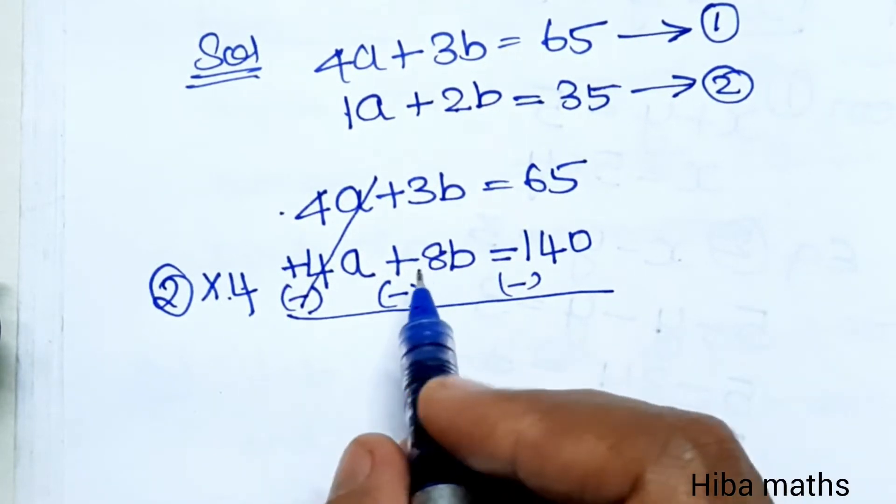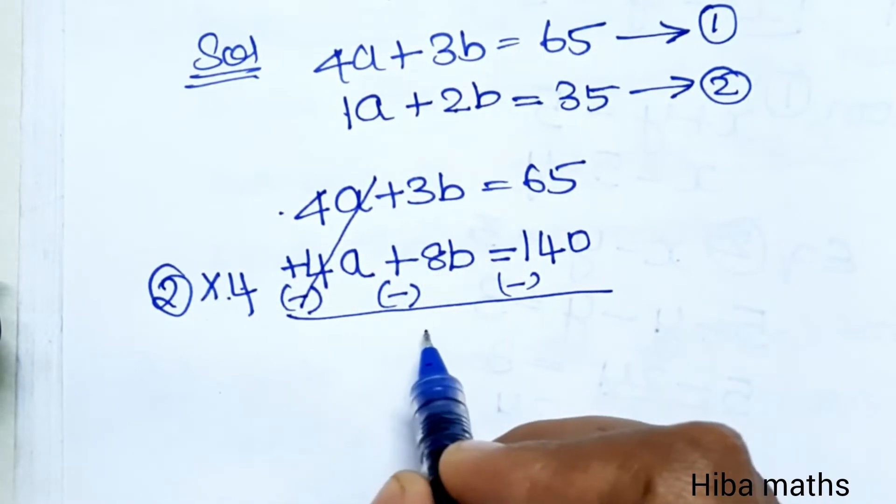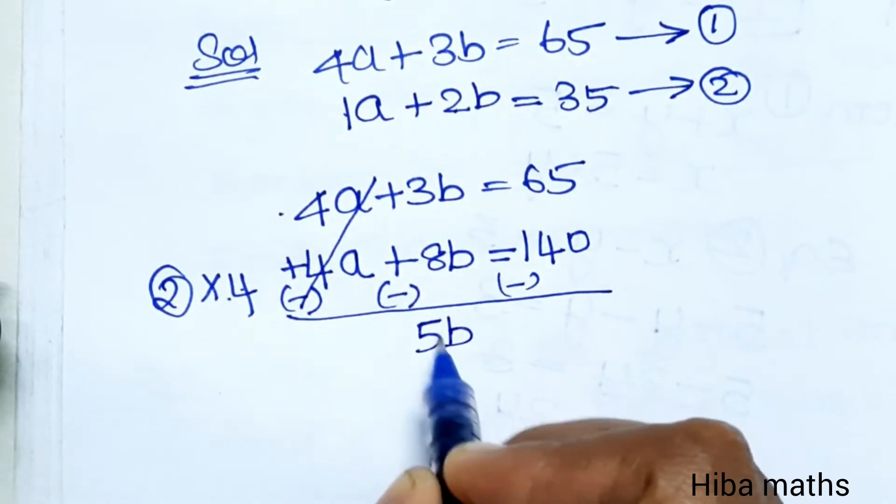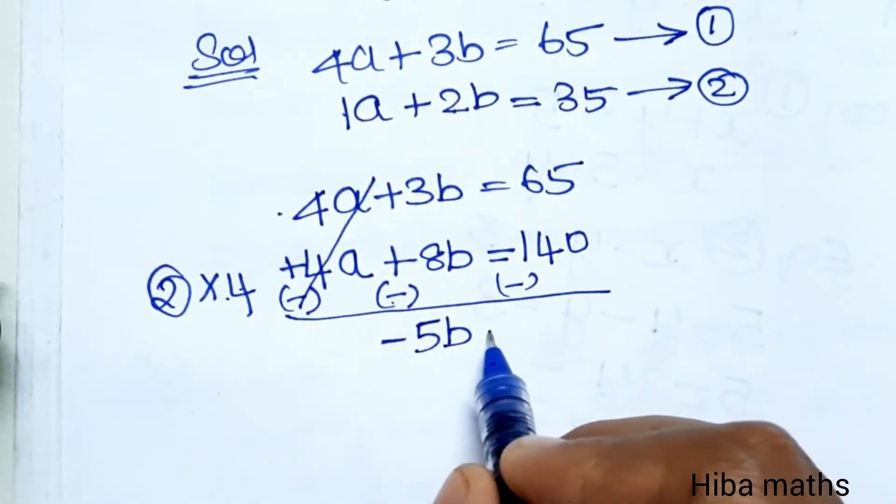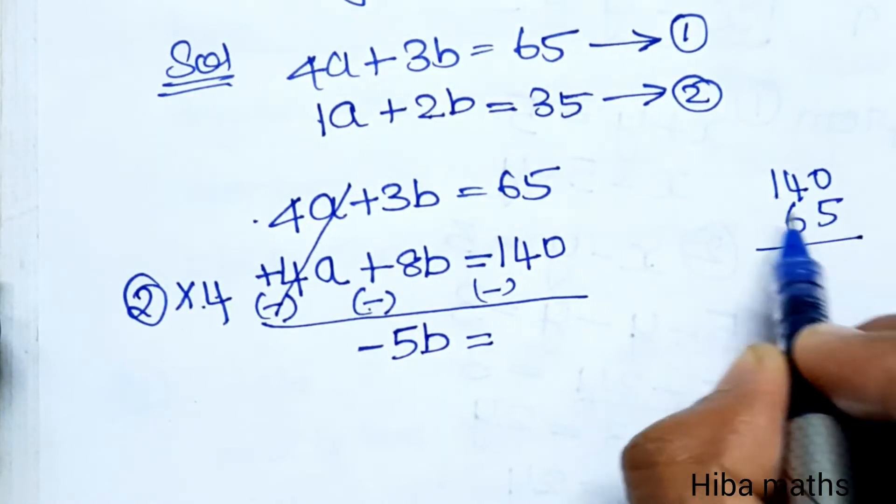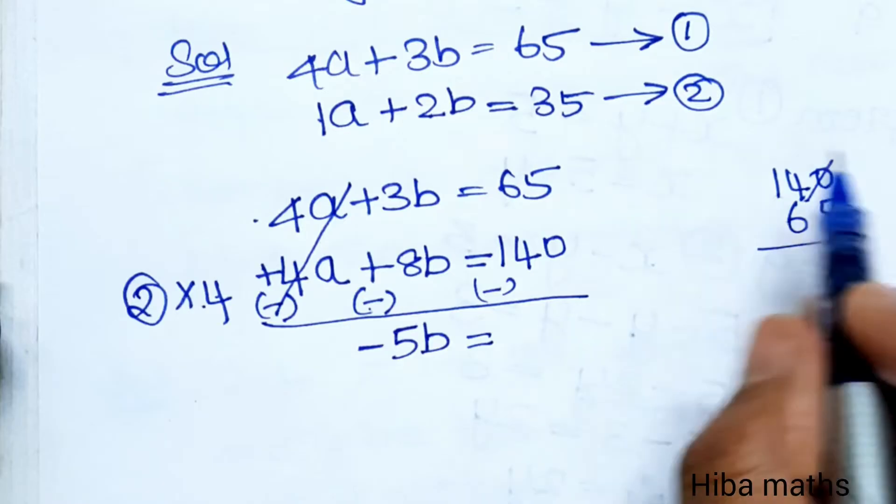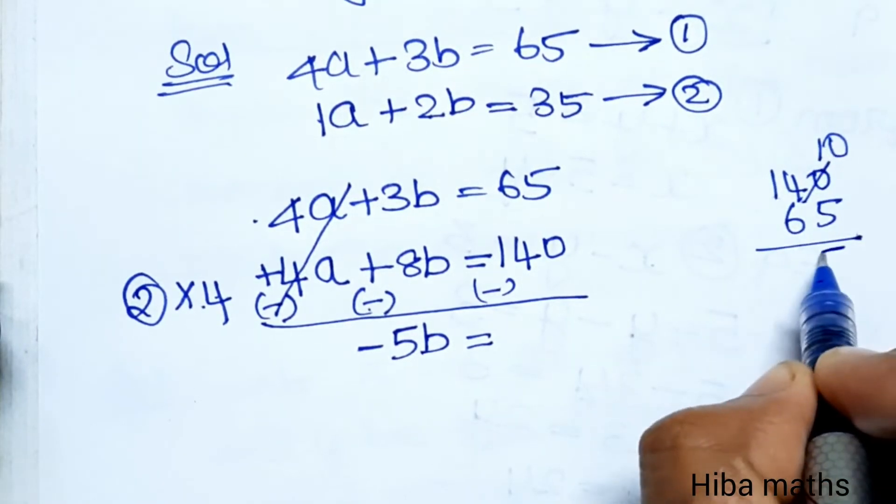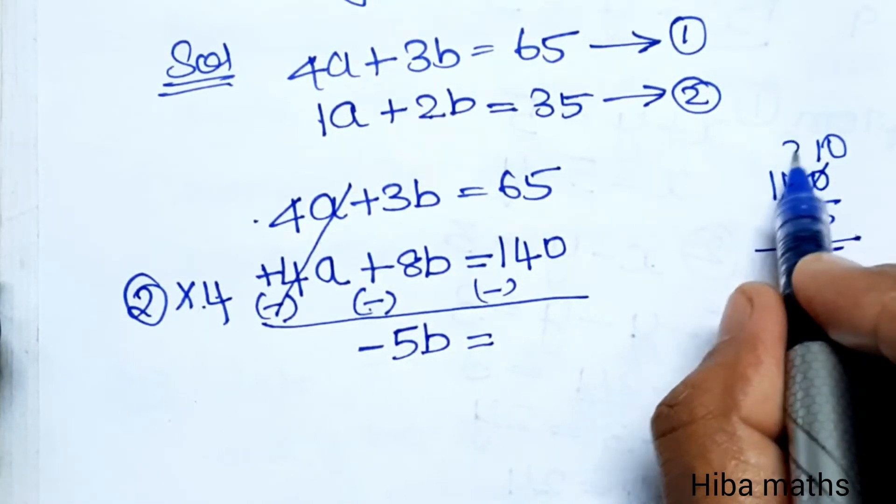3b minus 8b: 3 minus 8 equals minus 5b. For the constants: 65 minus 140. One minus and one plus, the difference is 75, and the sign is minus, so minus 75.